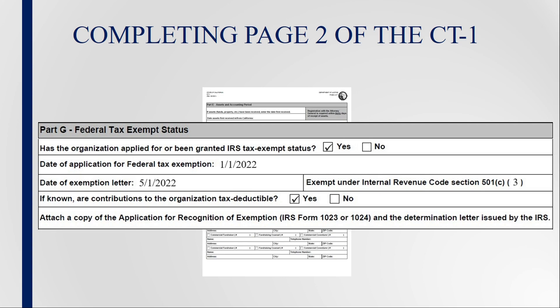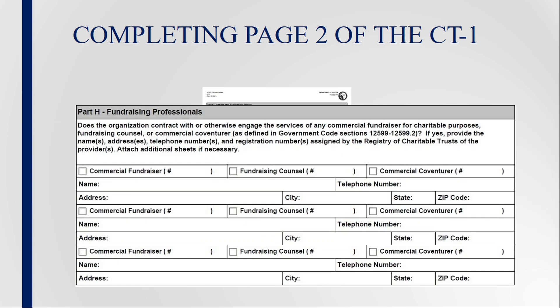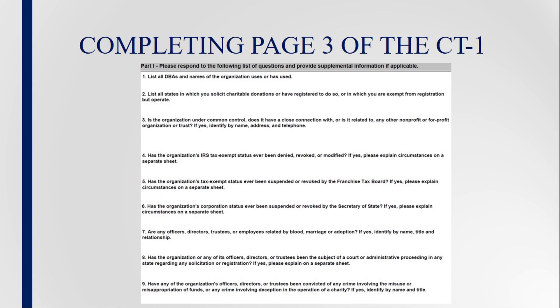If the organization does not have copies, the IRS can provide copies upon request. The next section should be completed if the organization contracts with or otherwise engages the services of a paid fundraiser, including a commercial fundraiser for charitable purposes, fundraising counsel, or commercial co-venturer. Page 3 of Form CT-1 contains a series of questions the organization should answer. If answered yes to any of these questions, please provide an explanation. Attach additional sheets if necessary.